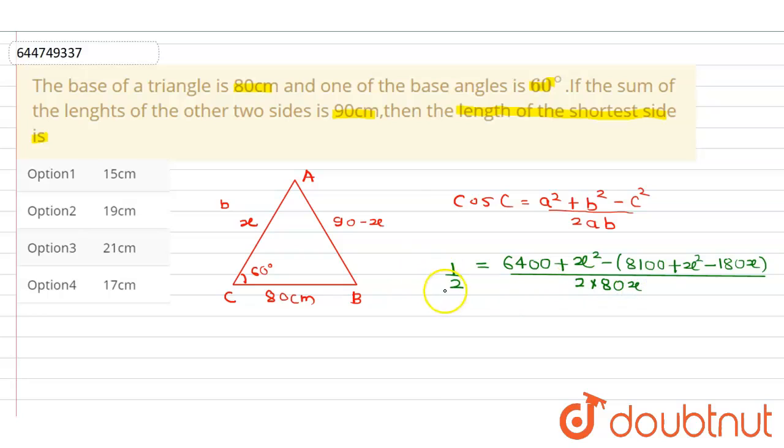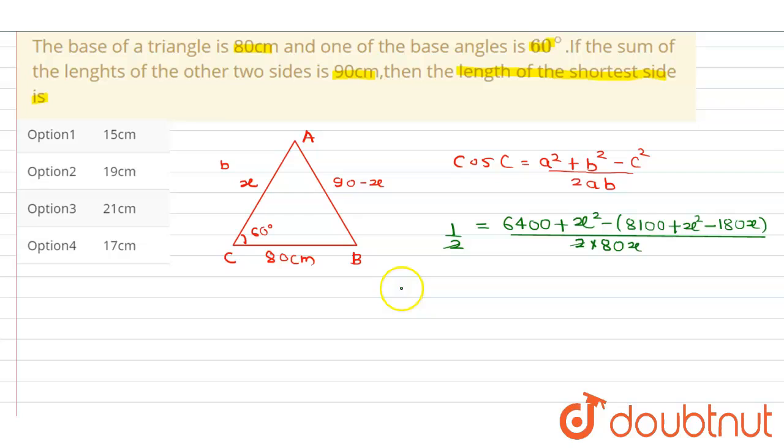Now cross multiply to get the answer. We will get 80x = 6400 plus, this will be